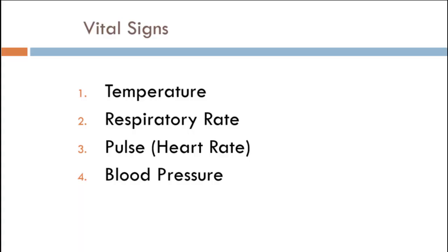We're looking at our first video leading up to our lab, and this lab is looking at vitals — a vital assessment — and it's going to incorporate heart rate. Part of the vitals assessment is blood pressure, but that's video number two. When we look at our vital signs, we have temperature, respiratory rate, pulse, heart rate, and blood pressure. We're going to be looking at the first three in this video, and then blood pressure in the next.